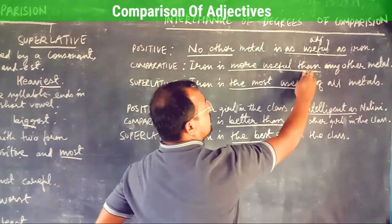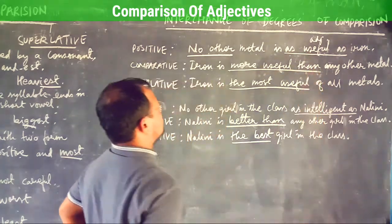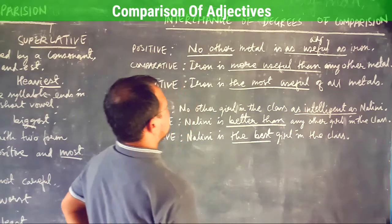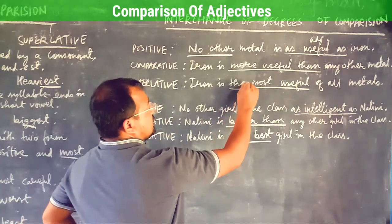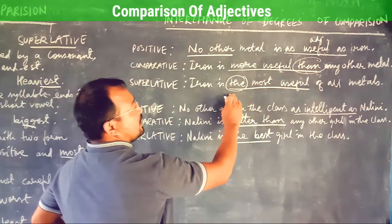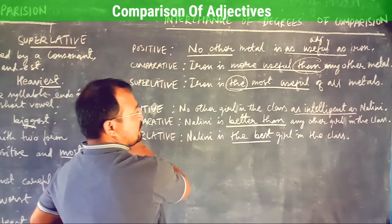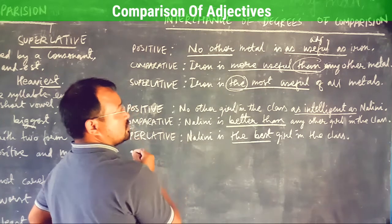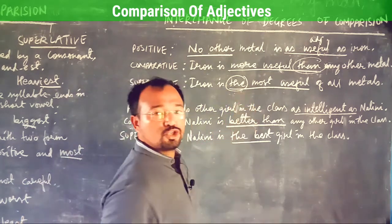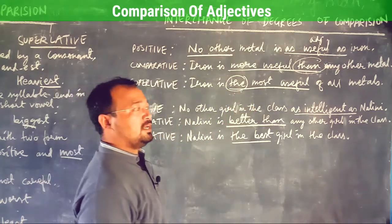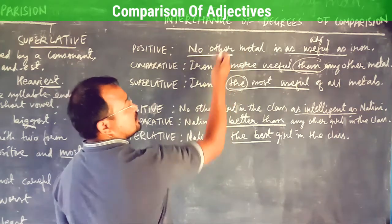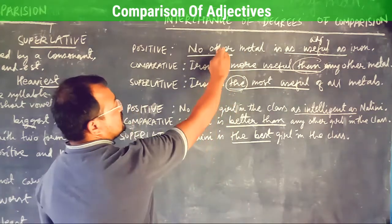In the superlative form: 'Iron is the most useful of all metals.' Note that 'the' is added before the adjective in the superlative form. Don't forget to add 'the' in the superlative form. In this way you can change a sentence from one degree to another — just stick to the rules.